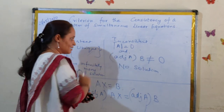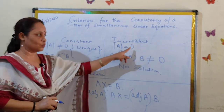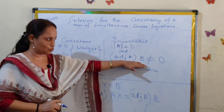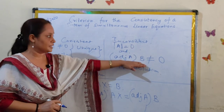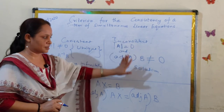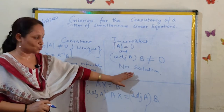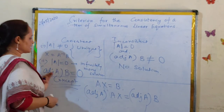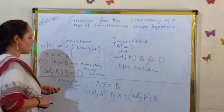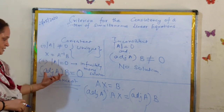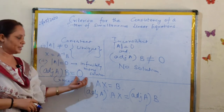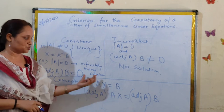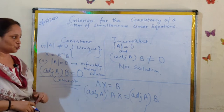So the second condition should also be applicable when the system is consistent with infinitely many solutions or inconsistent with no solution. Let's understand the concept behind how we got this criteria of adjoint A into B equal to null matrix, for which the system is consistent with infinitely many solutions.